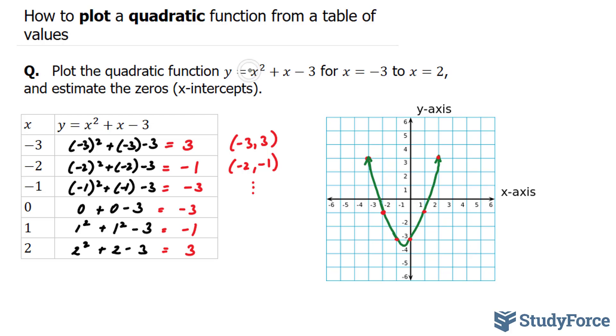And that's expected, especially since your A term is positive. If your A term is positive, you'll have a smiley face. And if your A term is negative, it opens downwards, you'll have a sad face. So there you have it, that is how to plot quadratic functions from a table of values.